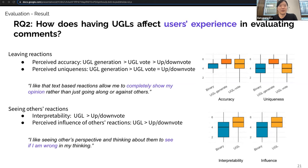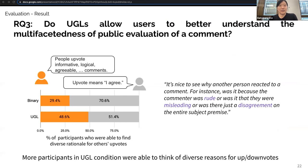We now move to our investigation on potential secondary effects of UGLs. We found that UGL participants better understood the multifacetedness of public evaluation of comments. In an open-ended question where participants described others' reasons for upvoting, only around 30% of binary participants mentioned a reason other than simple agreement. In the UGL group, the proportion was 50% — almost half of participants were able to identify reasons beyond simple agreement.